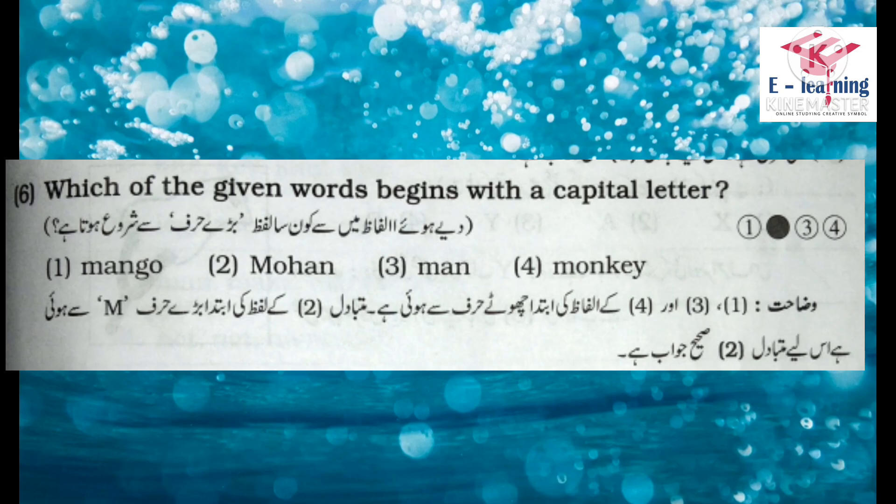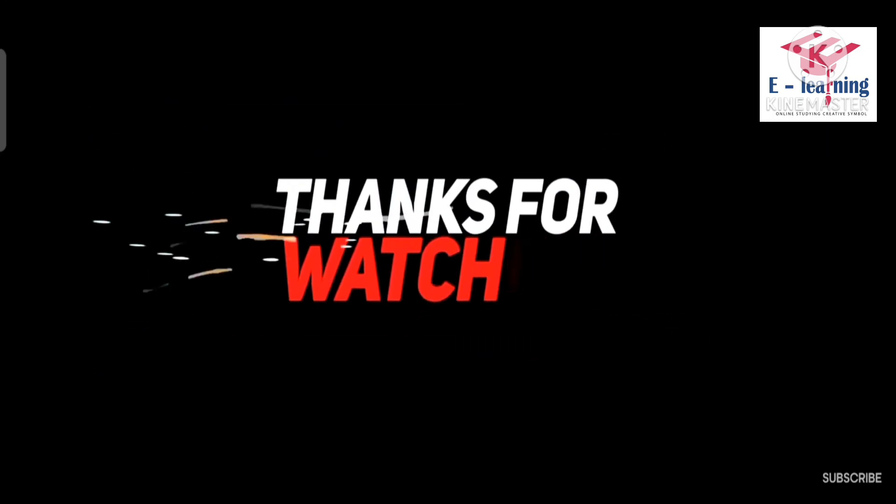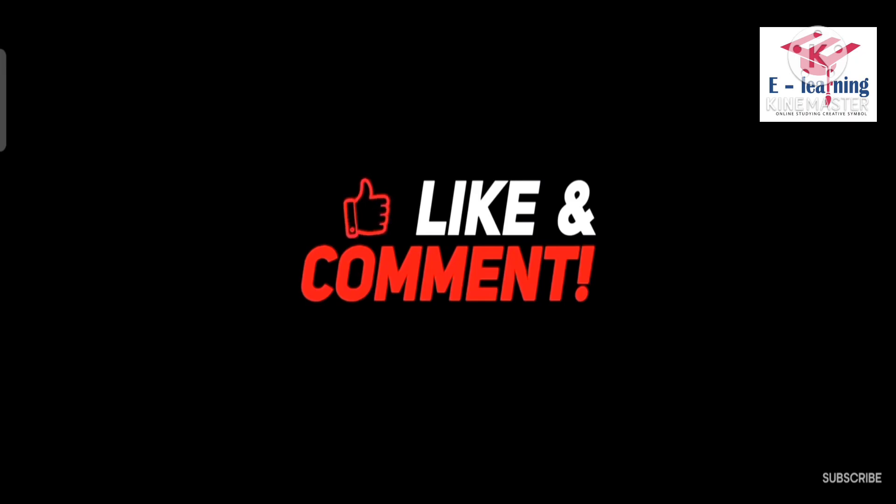Question number 6: Which of the given words begins with a capital letter? دیے گئے الفاظ میں سے کون سا لفظ بڑے حرف سے شروع ہوتا ہے؟ Options: Mango, Mohan, Man, Monkey. Explanation: متبادل ایک، تین اور چار کے الفاظ کی ابتدا چھوٹے حرف سے ہوتی ہے۔ متبادل دو کے لفظ 'Mohan' کی ابتدا بڑے حرف سے ہوتی ہے، اس لیے متبادل دو صحیح جواب ہے۔